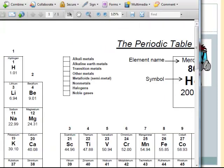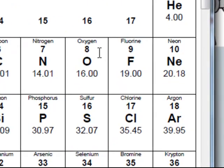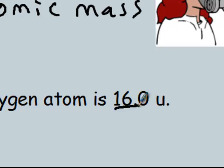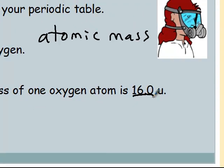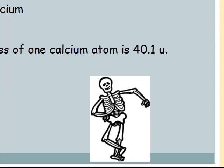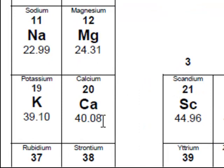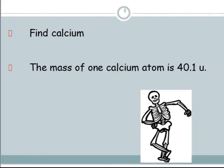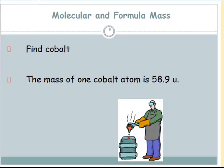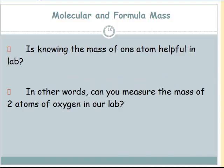On the periodic table, oxygen is 16.00 — I always round to three significant digits — so one oxygen atom has a mass of 16.0 atomic mass units. Calcium is 40.08, which rounds to 40.1 atomic mass units. We can do the same for cobalt or any other element. That value is the mass of one atom of that element — it's called its atomic mass.